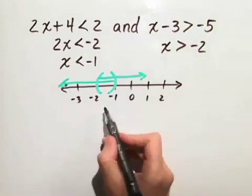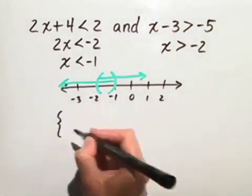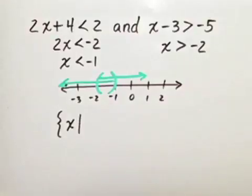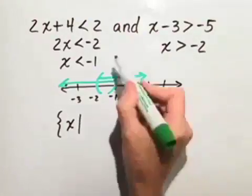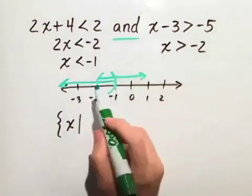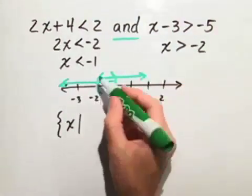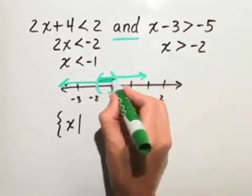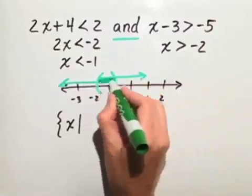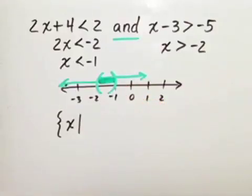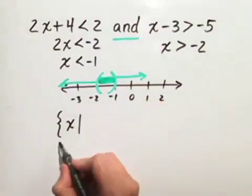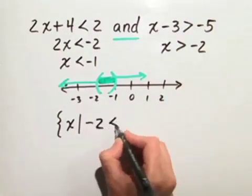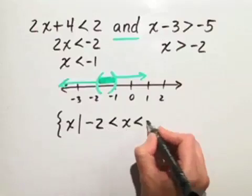In order to put this in set builder notation, we want the set of all x such that, well, let's think about this. We have the word and. So, that means the solution has to be values that occur in both the first inequality and the second inequality. They have to be common to both of them. Those are only numbers in between negative 2 and negative 1. So, it's the set of all x such that negative 2 is less than x is less than negative 1.